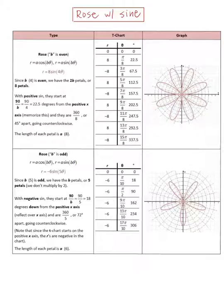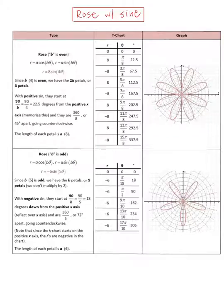When b is odd — for example, r equals negative 6 sine 5θ: b is 5 (odd), so we get 5 petals, not 2 times b. Since it's negative 6 sine, we start at 90 divided by b = 90/5 = 18 degrees down from the positive x-axis. Petals are 72 degrees apart going counterclockwise. The length of each petal is the absolute value of a, which is 6.